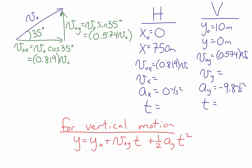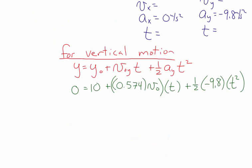For vertical motion, the height as a function of time is: y = y0 + v0y·t + ½·ay·t². Plugging in our vertical values: 0 = 10 + 0.574·v0·t + ½·(−9.8)·t².